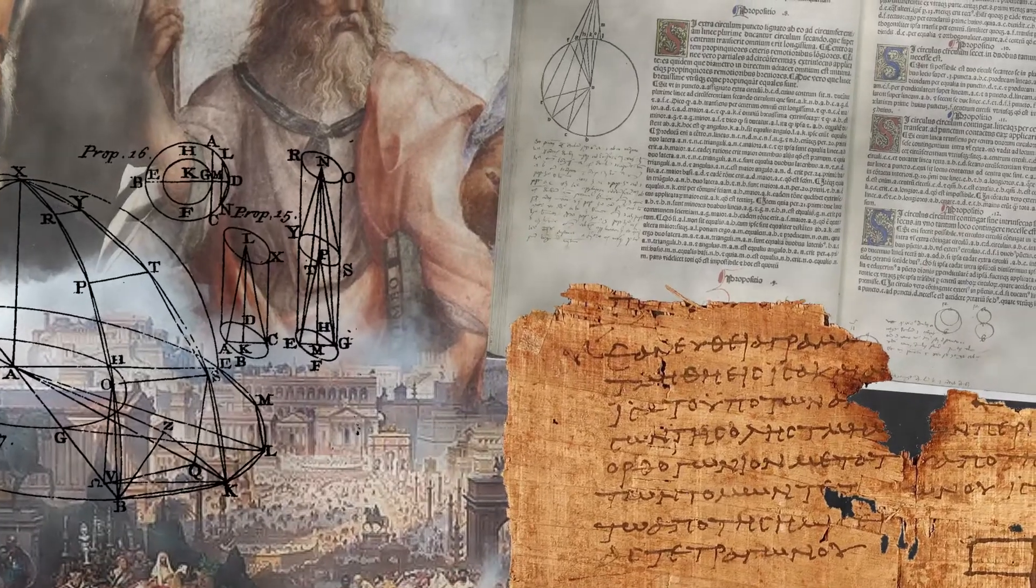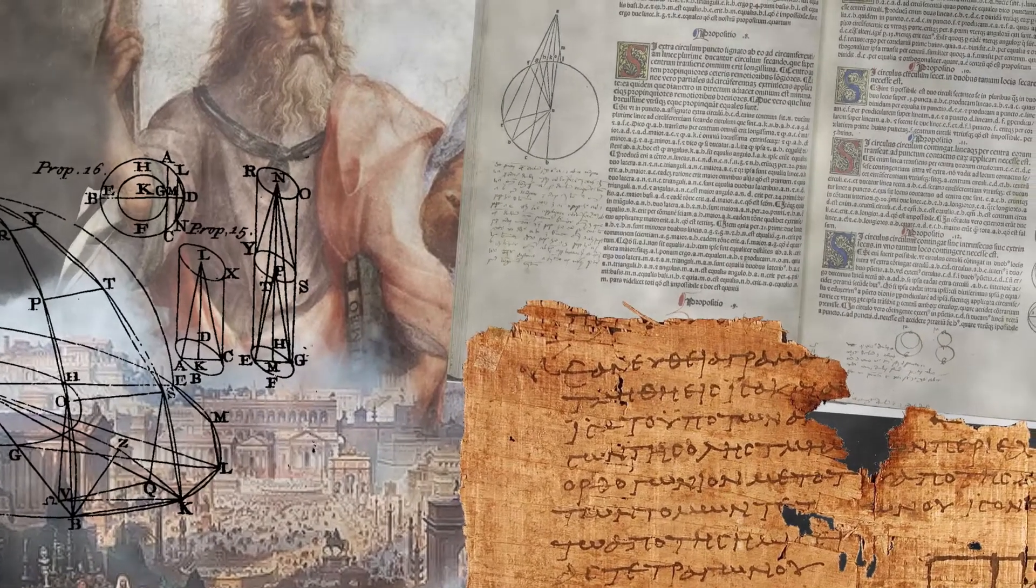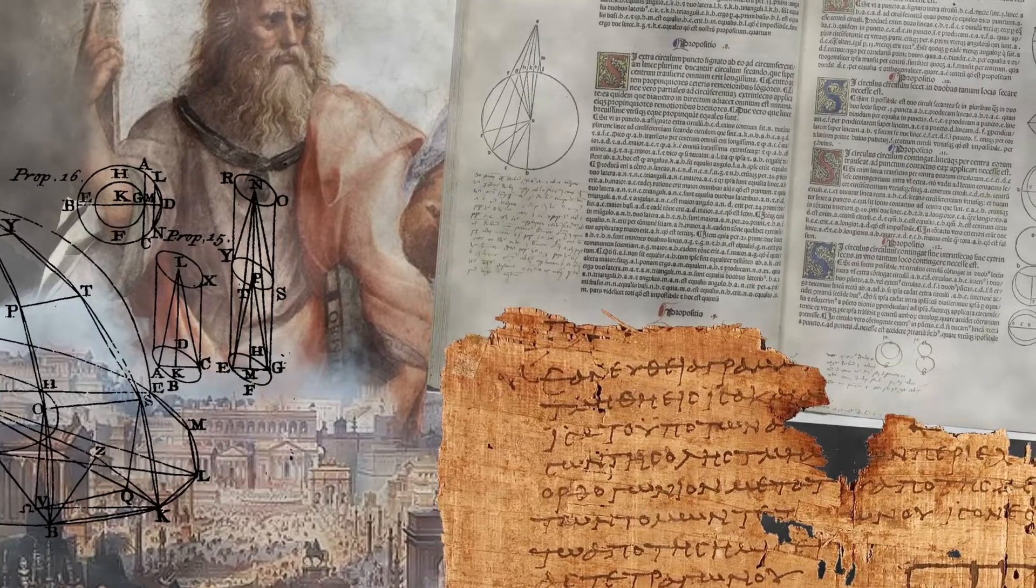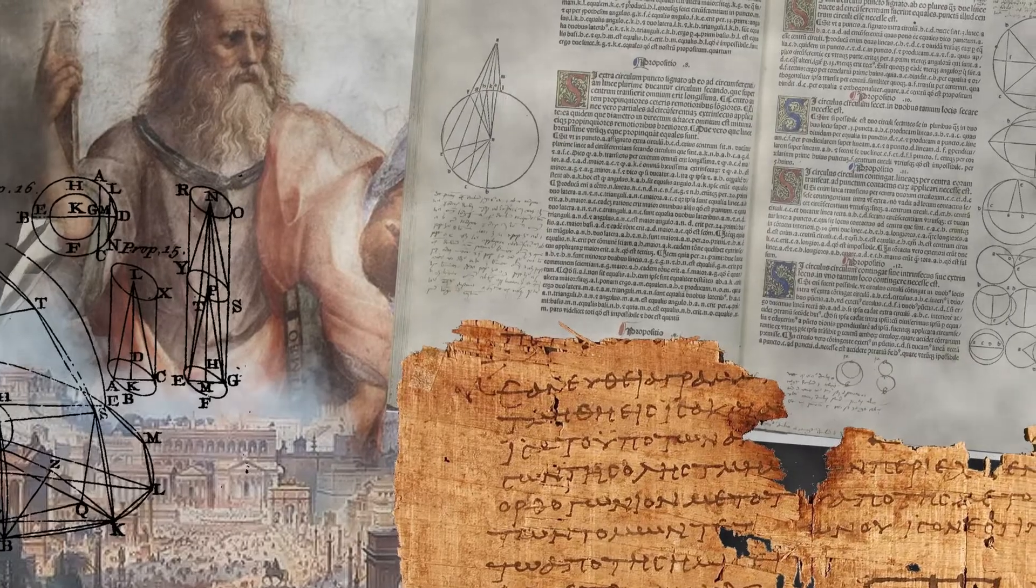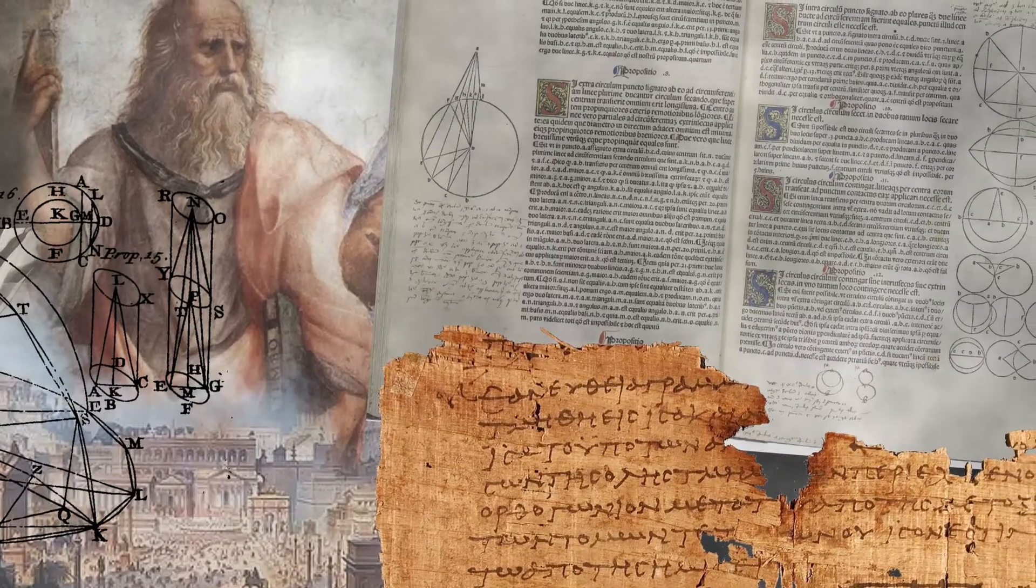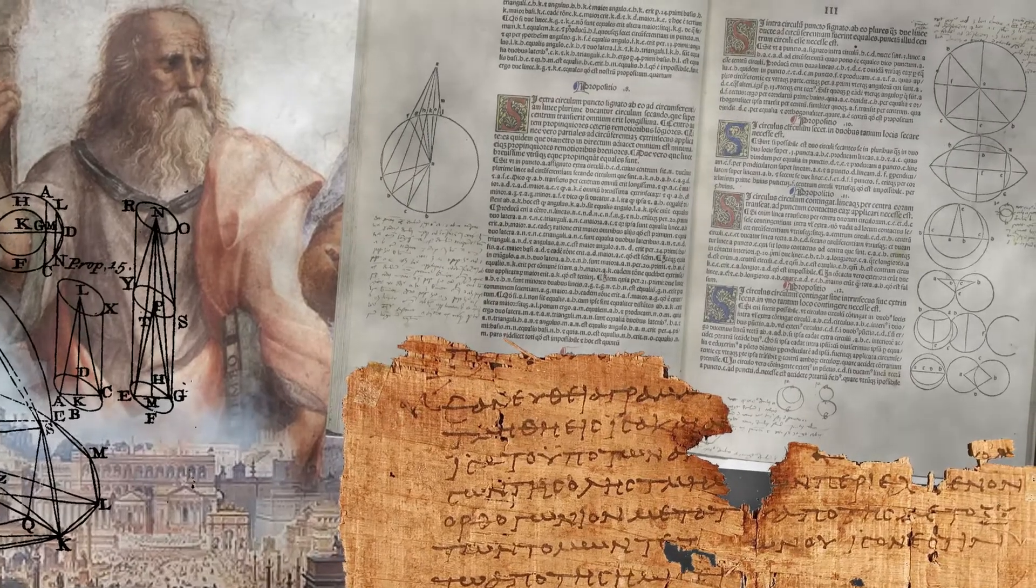A story is related of how Egyptian ruler King Ptolemy asked Euclid if he had to read the whole of his landmark book on geometry, Elements, to learn the subject. In response, Euclid is supposed to have said, There is no royal road to geometry.